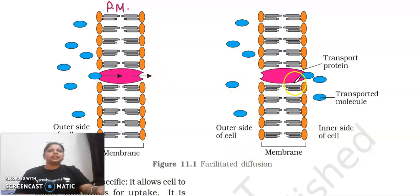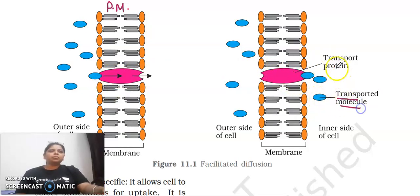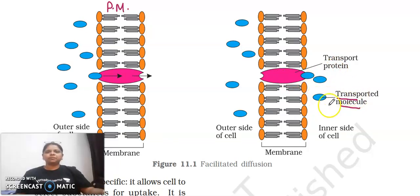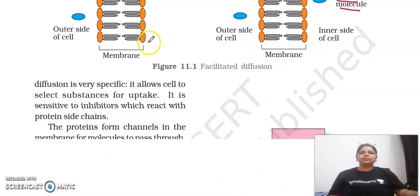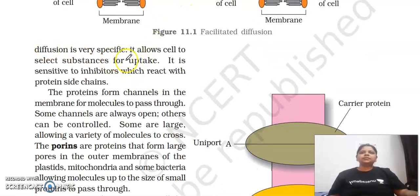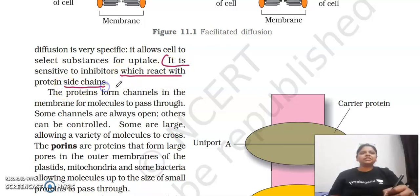Here, molecules diffuse with the help of a carrier protein — the pink-colored structure shown is the transported molecule. The protein assists in transferring the molecule across. Facilitated diffusion is very specific; it allows cells to select substances for uptake, and it is sensitive to inhibitors which react with protein side chains.